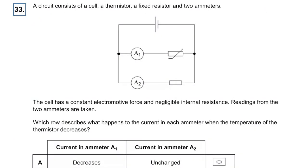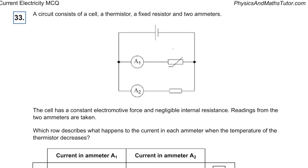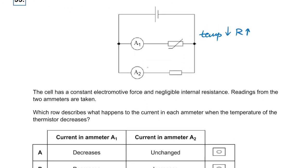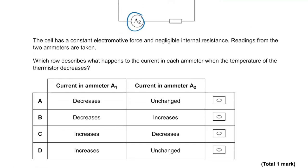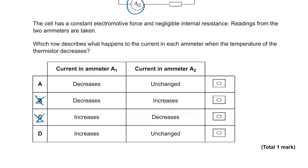Question thirty-three: a thermistor and resistor circuit. When temperature decreases, resistance of the thermistor increases. A2 measures the resistor branch, which is unchanged — so A2 stays the same, ruling out B and C. A1 measures the thermistor branch: as resistance increases, current decreases. So A1 decreases and A2 is unchanged. The answer is A.